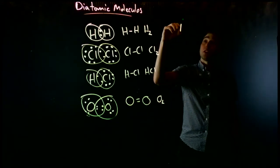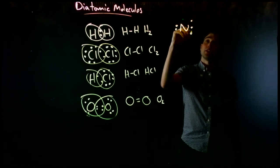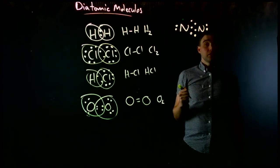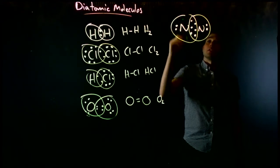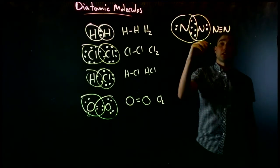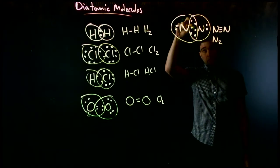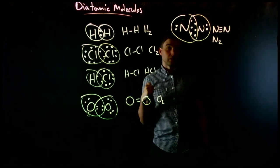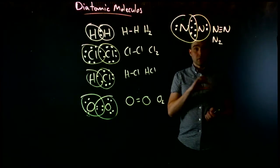Now if we do nitrogen: nitrogen has got 5 electrons in its valence shell. Looking at the structure, we can see that we can share three pairs of electrons between the atoms. The way we write that is N≡N, which gives us N2 for the formula. So here we're sharing three pairs of electrons — three bonds; with oxygen it was two pairs — two bonds; and with hydrogen it was one pair of electrons. All these are diatomic, made up of two atoms, and all of them are linear.